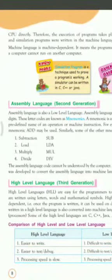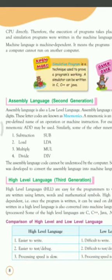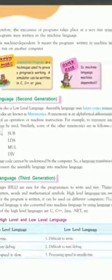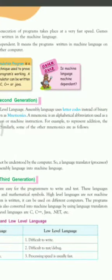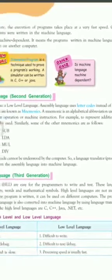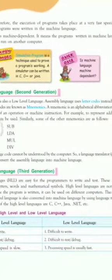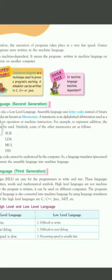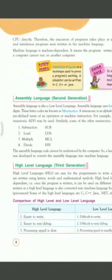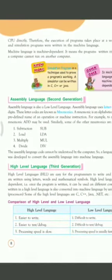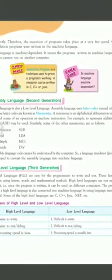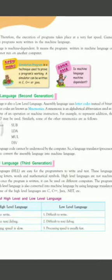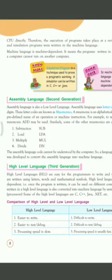The next one is assembly language, the second generation. Assembly language is also a low level language. It uses letter codes instead of binary digits. These letter codes are known as mnemonics. Mnemonics are alphabetical abbreviations used as predefined names of an operation or machine instruction. In mnemonics, we use alphabetical codes.